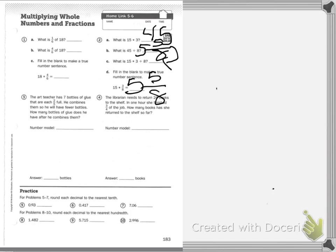And I'm going to do number 4. But I will read number 3 to you. Number 3 says, the art teacher has 7 bottles of glue that are each 2/5 full. He combines them so he will have fewer bottles. How many bottles of glue does he have after he combines them all? You need a number model and your answer. Show your work.